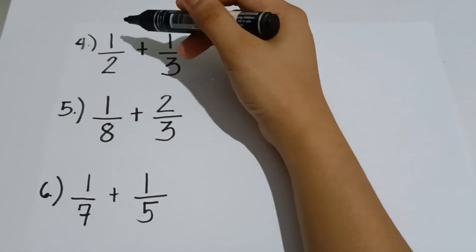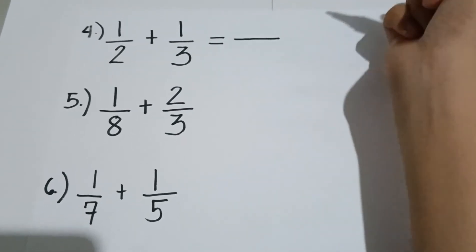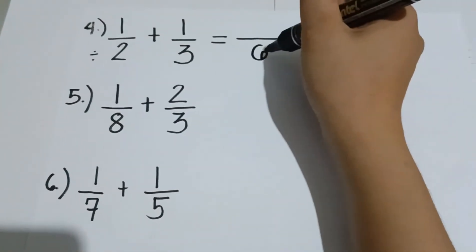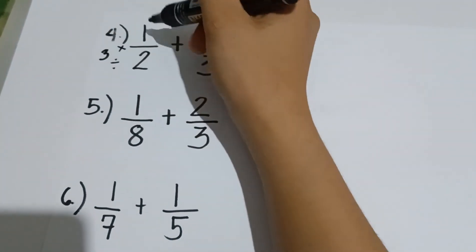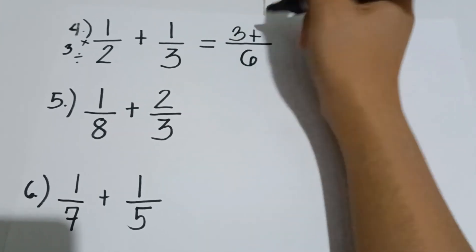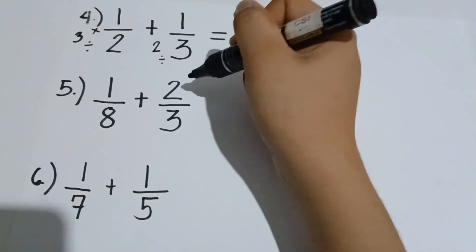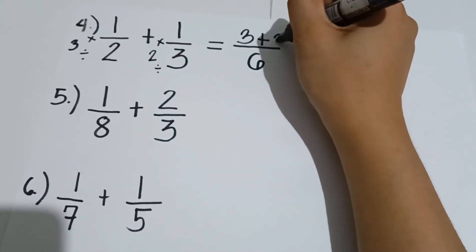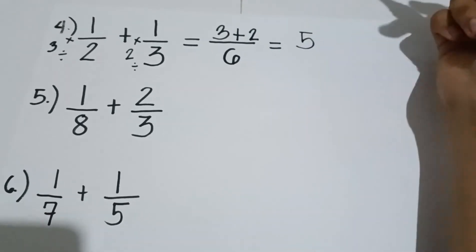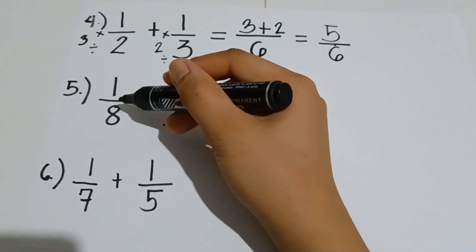Let's have example number 4: 1 half plus 1 third. We find the LCD of the two fractions. Think of a number that can be divided by both 2 and 3 — that gives us 6. So 6 divided by 2 is 3, multiplied by 1, gives us 3. Plus, 6 divided by 3 is 2, and we multiply by the numerator 1; 2 times 1 is equal to 2. We add 3 plus 2, that is equal to 5. Copy the denominator, which is 6. The final answer is 5 over 6.